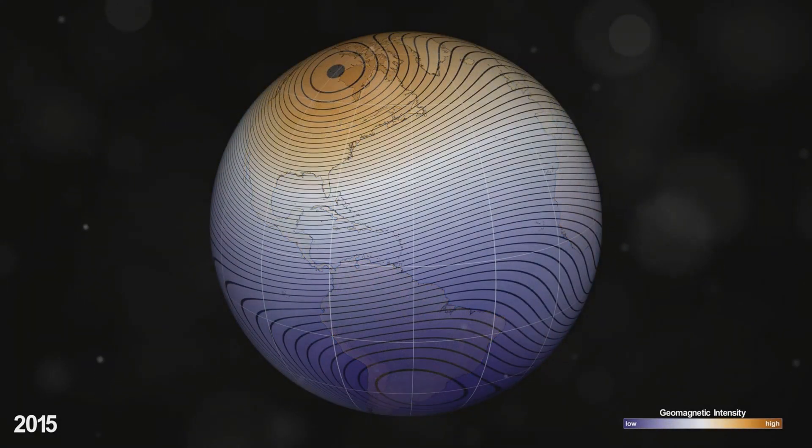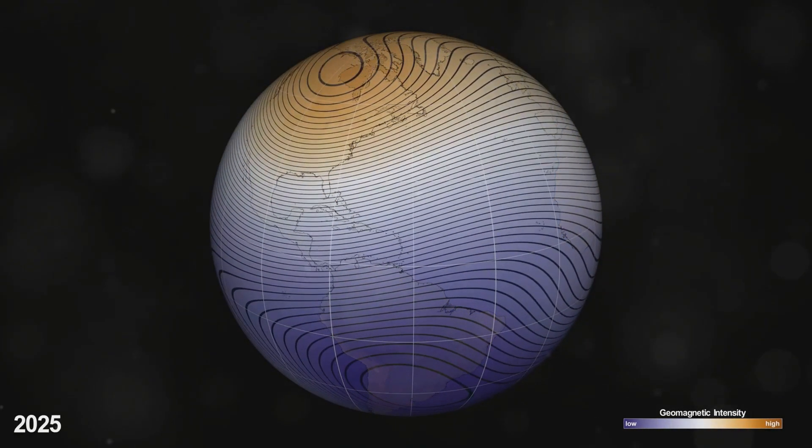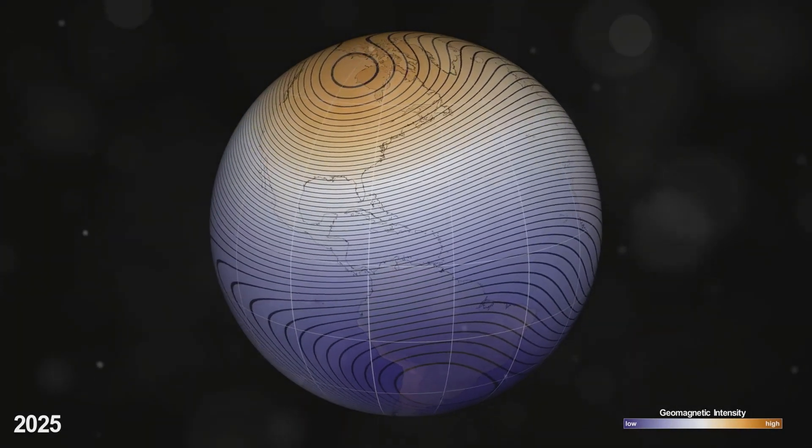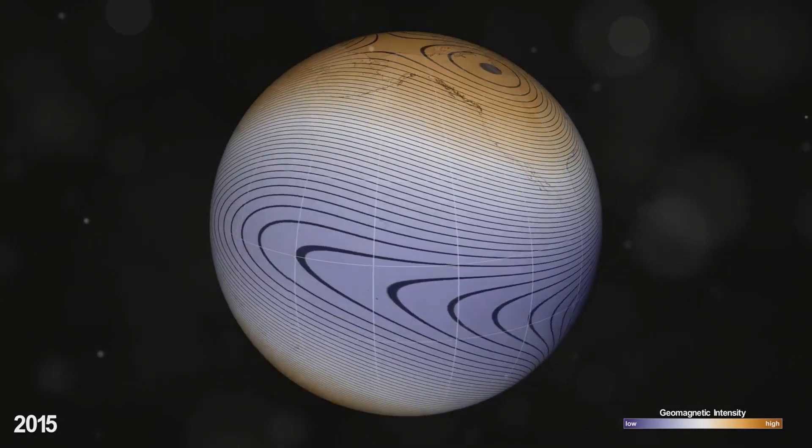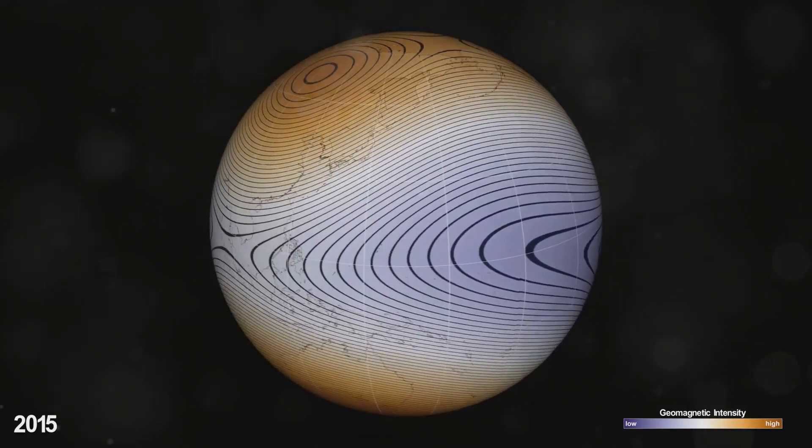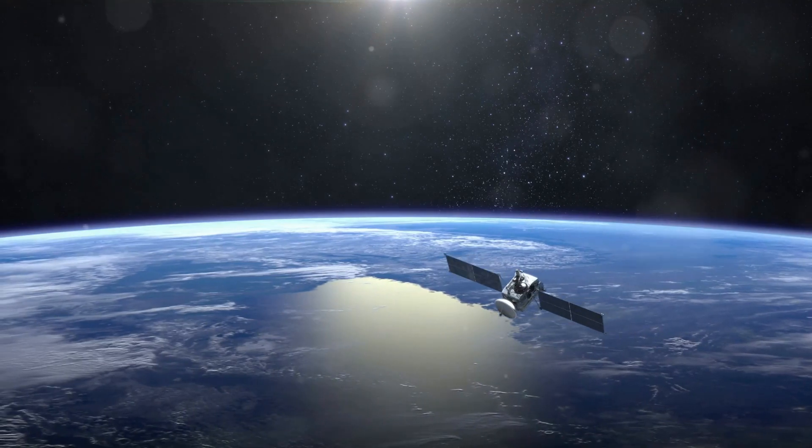This phenomenon, a massive region of weak magnetic intensity, stretches from South America to Southwest Africa. It is not only an anomaly in the Earth's magnetic field, but also a potential source of risk for satellite and spacecraft technology.